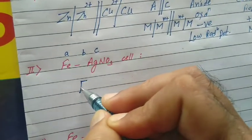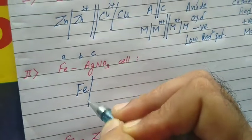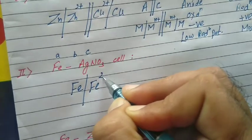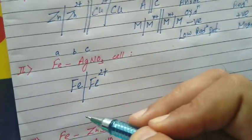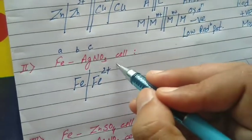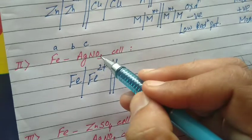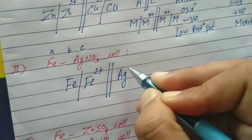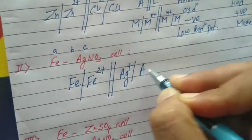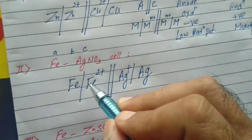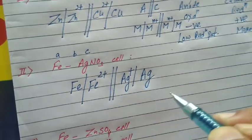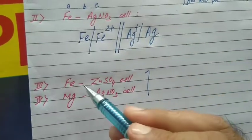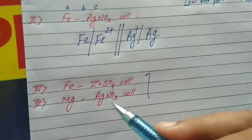Another example: if the metal is iron, metal ion is Fe²⁺, and the electrolyte will be FeSO₄, so the cation part is Fe²⁺ at anode. The electrolyte is generally a metal sulfate solution. Then the salt bridge. At cathode, if the counter ion is nitrate, the cation part in the electrolyte is Ag⁺. So the representation is Fe | Fe²⁺ || Ag⁺ | Ag. Students, please practice these two: the Fe/ZnSO₄ cell and the Mg/AgNO₃ cell.